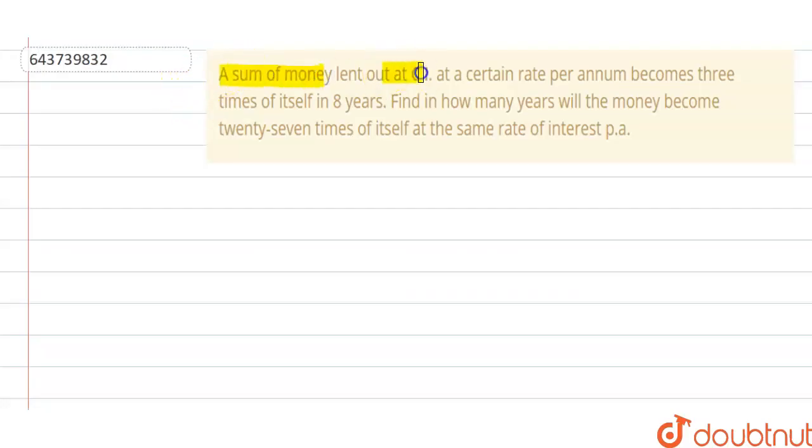A sum of money lent out at compound interest at a certain rate per annum becomes three times of itself in eight years. Find in how many years will the money become 27 times of itself at the same rate of interest per annum.